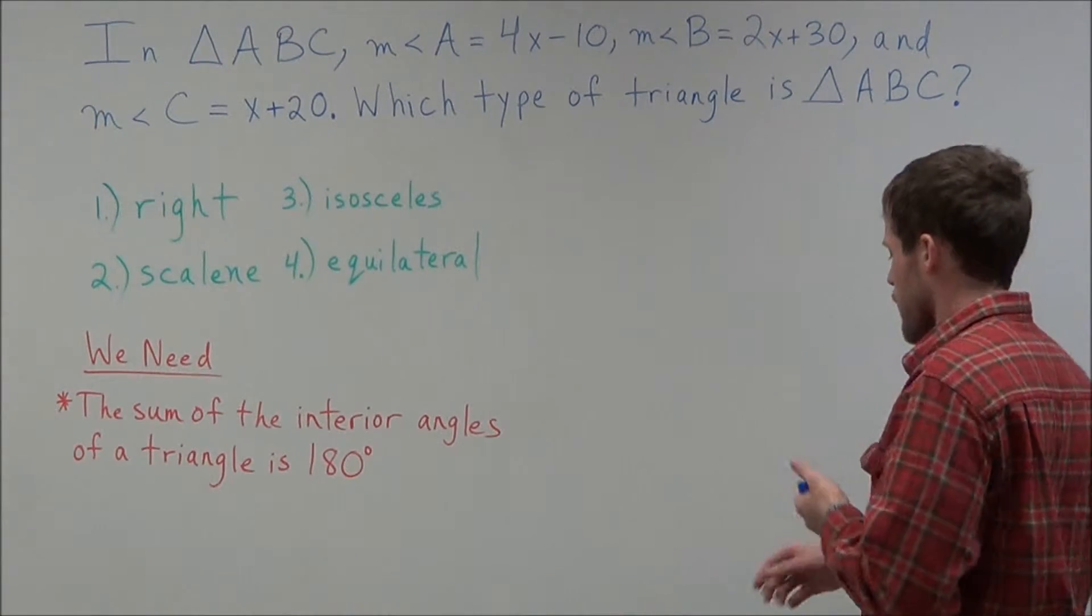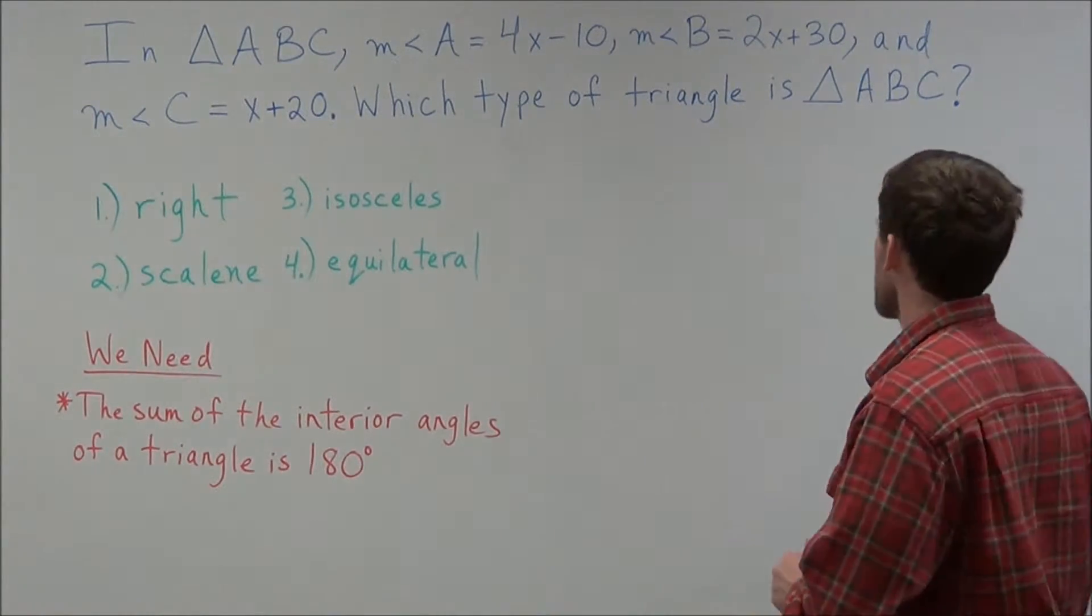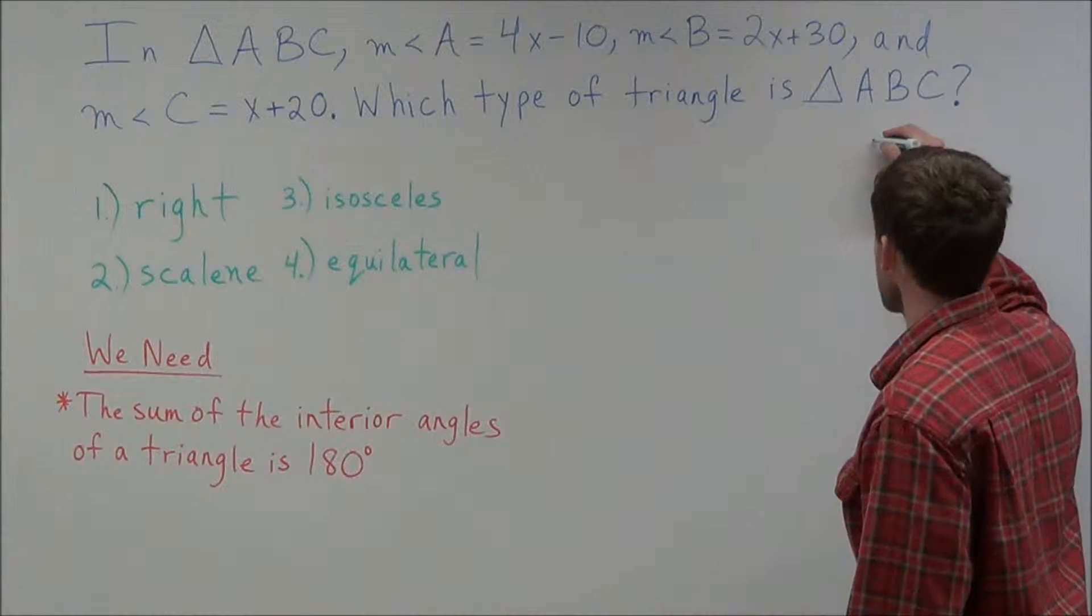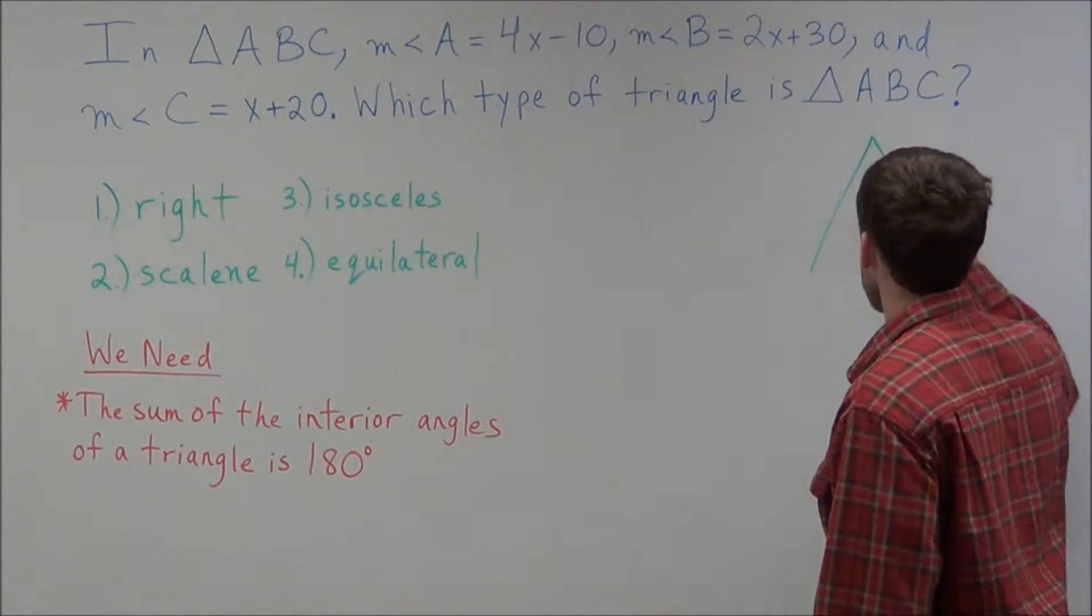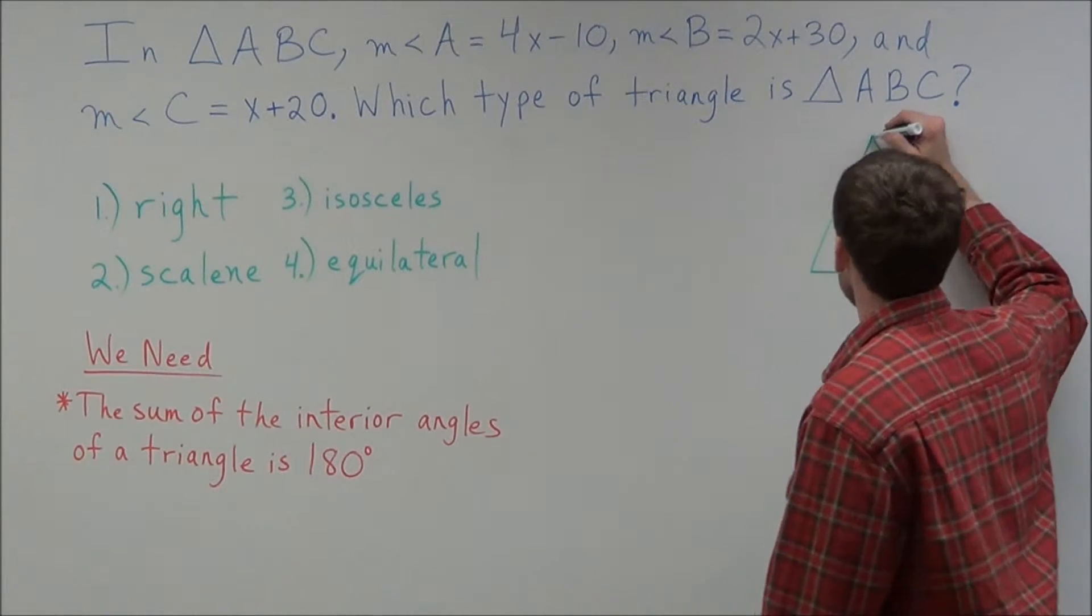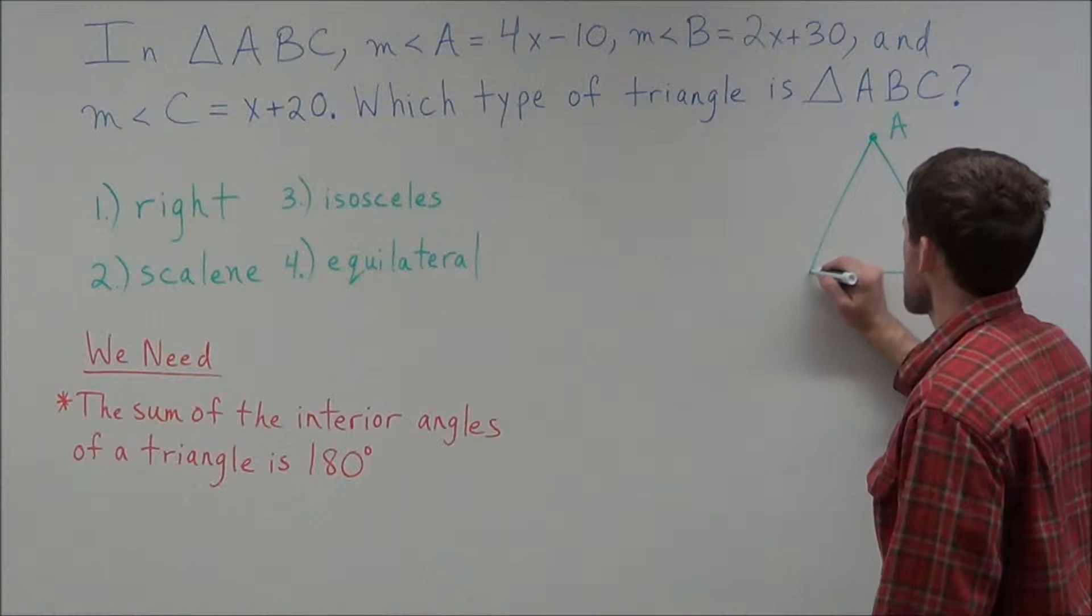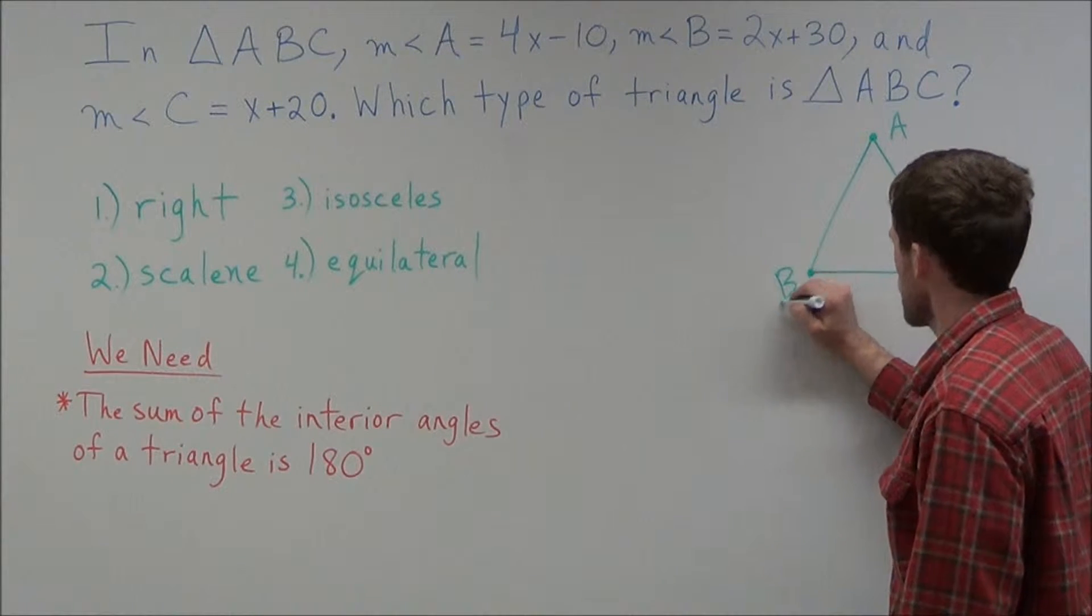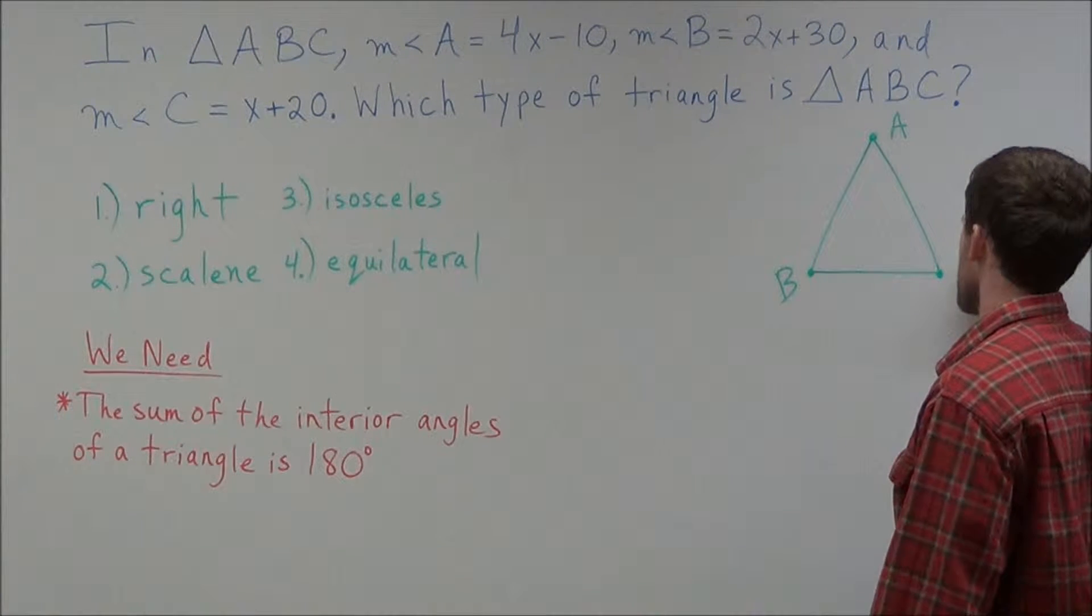So what we need to do is, first, to get a visual of what's going on, we can create a diagram. That is, we can draw a triangle to use as a model. So we can label the first vertex of this triangle A, the second vertex B, and finally the third vertex we can label C.